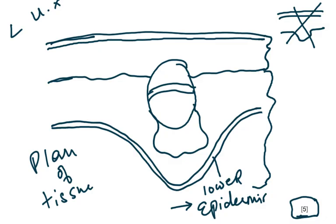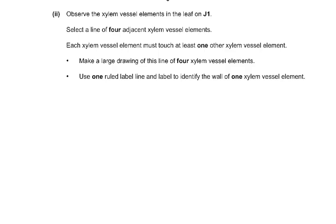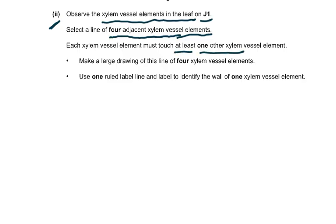Coming to part two of the question: observe the xylem vessel elements in the leaf on J1. Select a line of four adjacent xylem vessel elements — each xylem vessel element must touch at least one other xylem vessel element. Make a large drawing of this line of four xylem vessel elements. Use one ruled label line and label to identify the wall of one xylem vessel element.